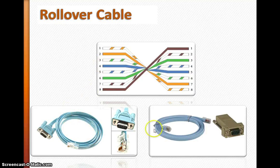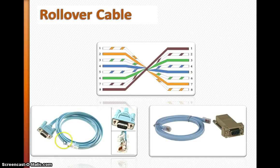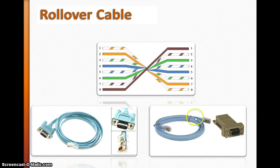There are two kinds of rollover cables. One has the DB9 connector attached to the cable — this end goes to the PC, this end goes to the router. The other kind has both ends as RJ45, and a separate DB9 connector piece. Both types look like this.